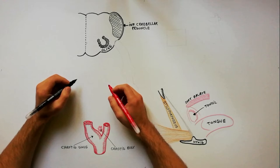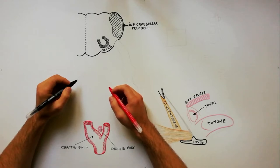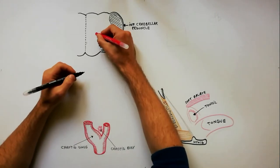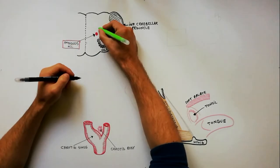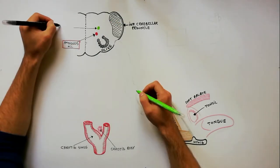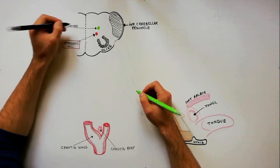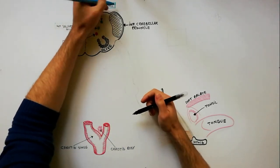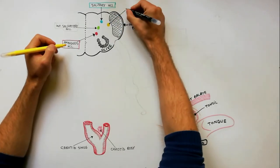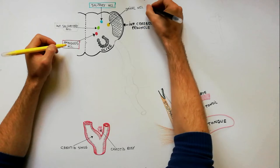The glossopharyngeal nerve, or the ninth cranial nerve, is a mixed nerve and has four related nuclei located in the medulla. We will indicate these nuclei using different colors. With the red color we indicate the nucleus ambiguus. With the green color is the inferior salivatory nucleus. With the blue color we have the solitary nucleus, and with the yellow color we indicate the spinal nucleus of the trigeminal nerve.